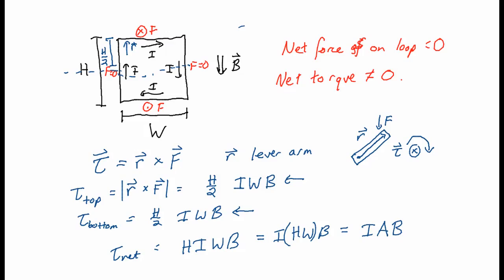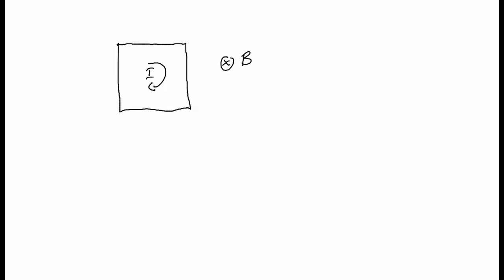Now the loop is going to start spinning. Imagine the top wire is spinning into the page and the bottom wire is spinning out of the page. It spins for a while until eventually the loop is lying flat — you're looking at it edge-on and the magnetic field is pointing down through it. Now imagine I'm looking at the loop where the current is running clockwise, but the magnetic field is now pointing down into the page.